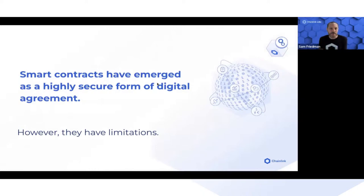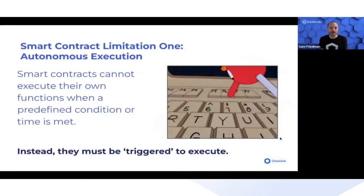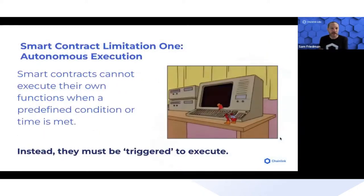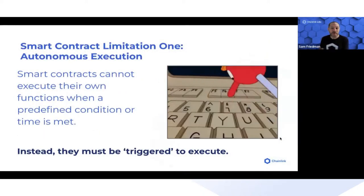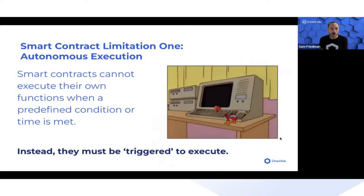Smart contracts do have some key limitations. The first key limitation is that they can't execute themselves — a smart contract needs an externally owned account.